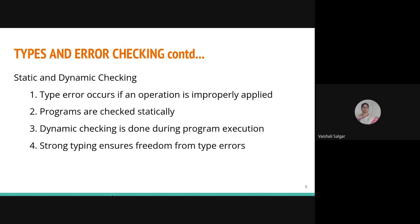Strong typing ensures freedom from type errors. When using Eclipse IDE, if you declare a variable as int and try to assign a float value, it will give you an error immediately. Whenever you make a syntax error, a red cross appears on the left-hand side right away. That is strong typing — if you make any mistake it will let you know at that time, so there won't be any dynamic errors later.